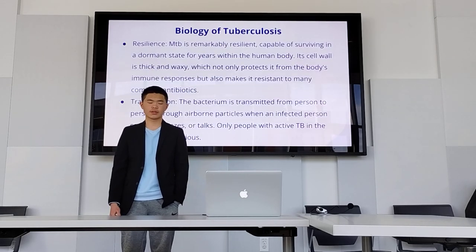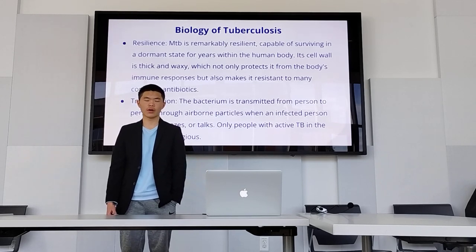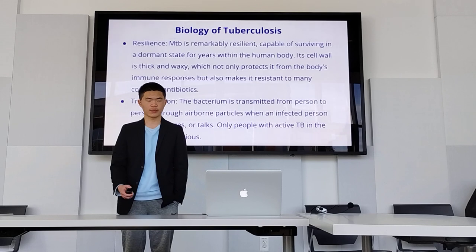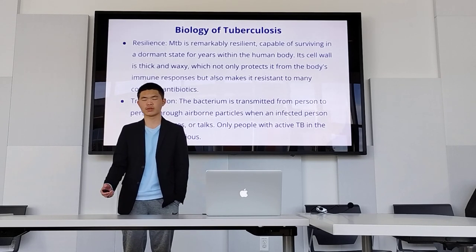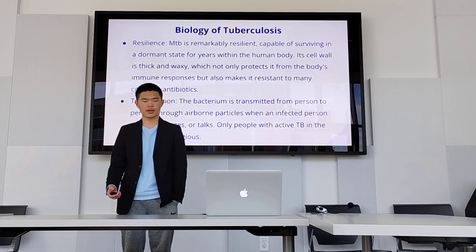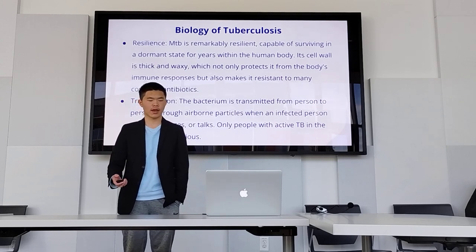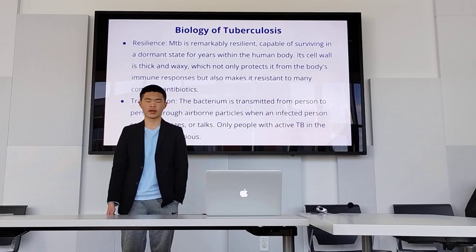Tuberculosis is actually very resilient, capable of surviving in the body in a dormant state for years. Its cell wall is thick and waxy, which contributes to this because it protects it from the immune response and makes it resistant to many common antibiotics. It's transmitted through airborne transmission — when an infected person coughs, sneezes, or talks, droplets hang in the air. Only people with active TB in the lungs are contagious.